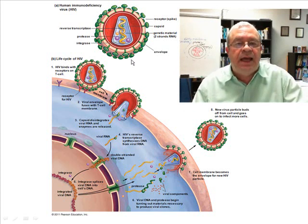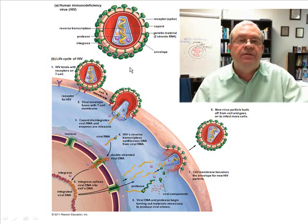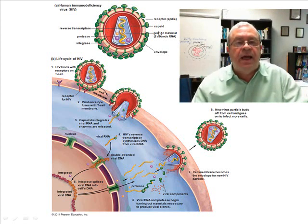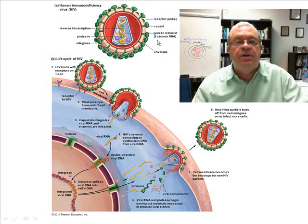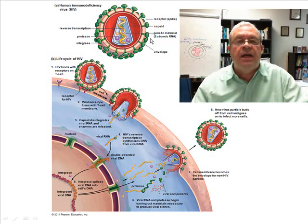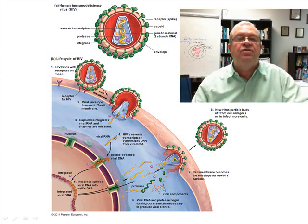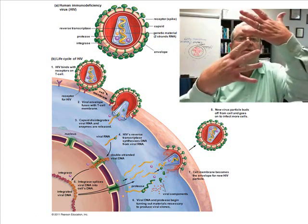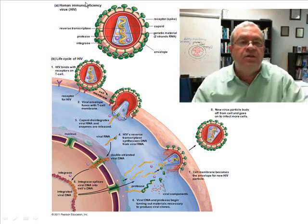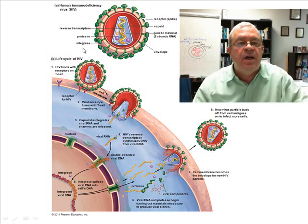The HIV virus is a very fancy virus. It has all three components that we talked about earlier. It has a capsid — the protein coat. Within the capsid it has genetic material, which for HIV takes the form of two strands of RNA with a total of nine genes. Also within the capsid there are three enzymes — we didn't see that with the bacteriophage — called reverse transcriptase, protease, and integrase.